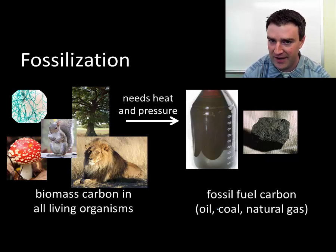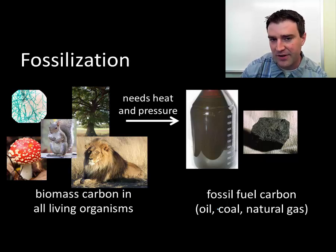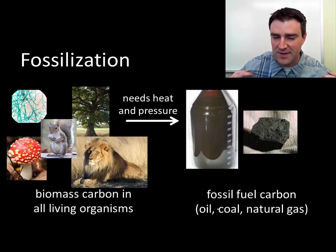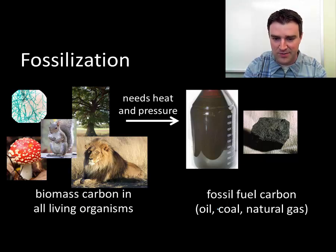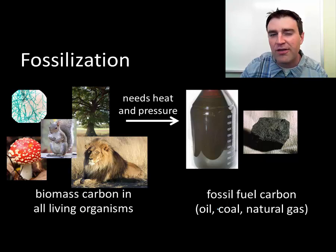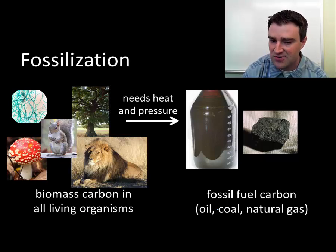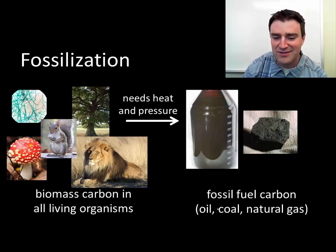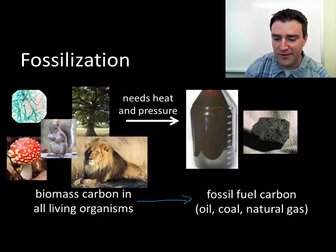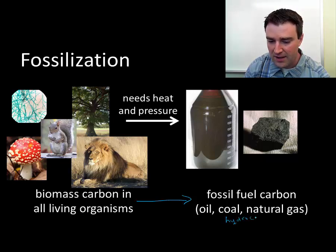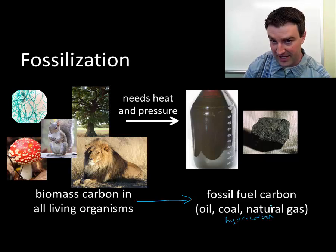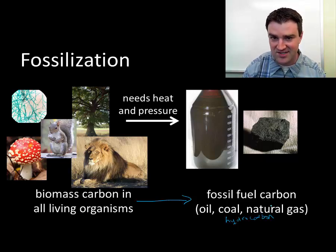What else can happen to biomass carbon? In special cases, when organisms die before being decomposed, their bodies may get buried through natural processes deep under the earth where decomposers don't have access. Through a very long process — millions of years requiring tremendous heat and pressure — that biomass carbon can become fossil fuel carbon. Fossil fuels like oil, coal, and natural gas, sometimes called hydrocarbons, are essentially the carbon from organisms' bodies converted into an ultra-energy-rich form.